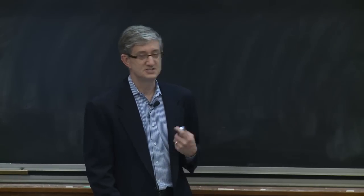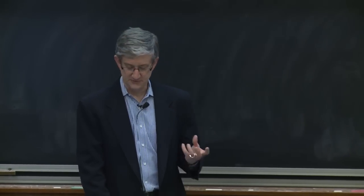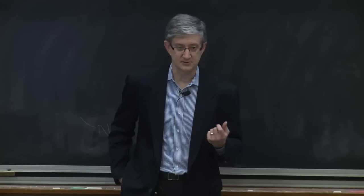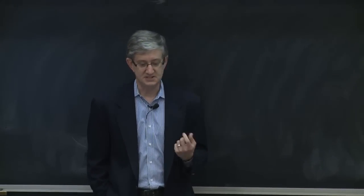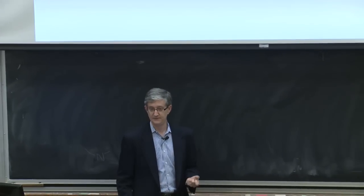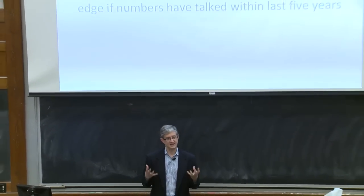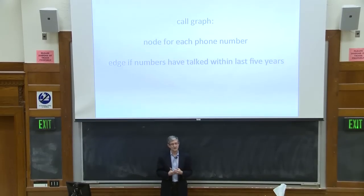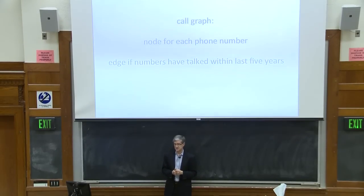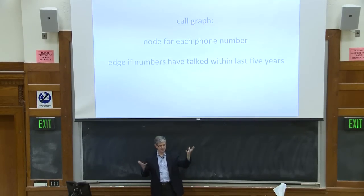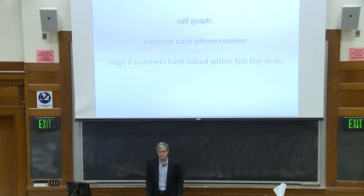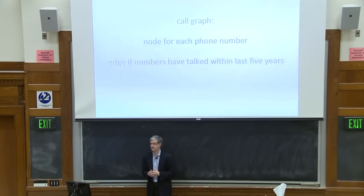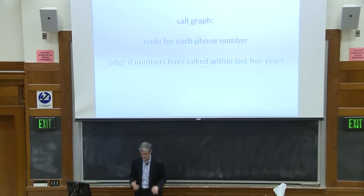What does the agency do with this data once they get it? One particular thing they do is build a data structure I'll call the call graph. This is a graph in the computer science sense — a set of nodes connected by edges. There's a node for every phone number, and there's an edge between two nodes if those numbers have talked to each other at all within the last five years. That's the call graph.